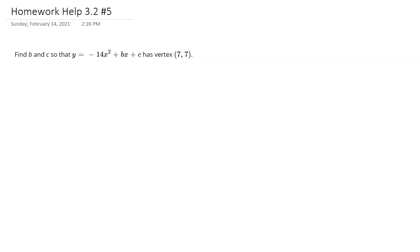Well, a couple of things that you know given this information. We know that if it has a vertex at (7, 7), that is an xy value that will equal in your equation. So that would be 7 equals negative 14 times 7 squared plus b times 7 plus c.